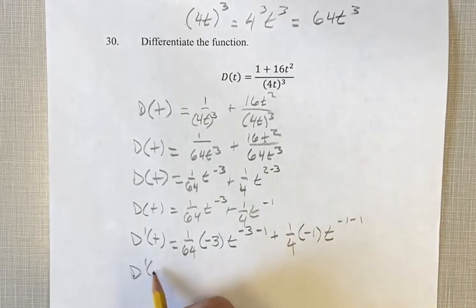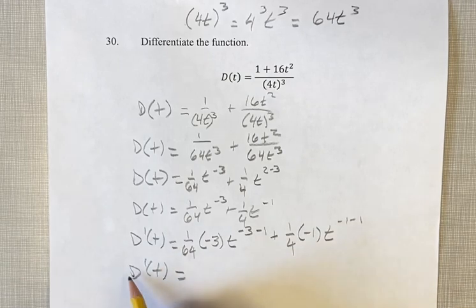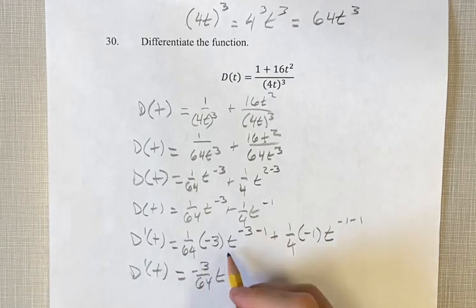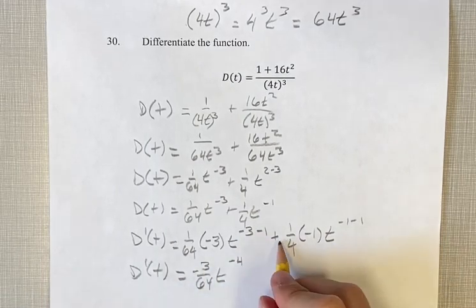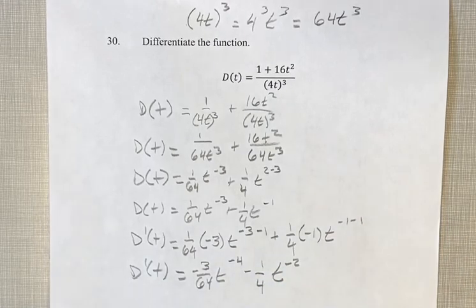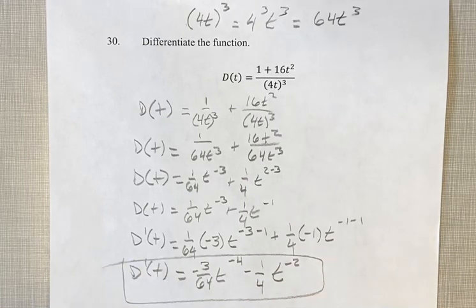Now we just simplify this. d prime of t equals negative 3 over 64 times t to the negative 3 minus 1 is negative 4, plus 1 fourth times negative 1 is minus 1 fourth t to the negative 1 minus 1 is negative 2. This is your final answer.